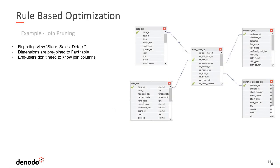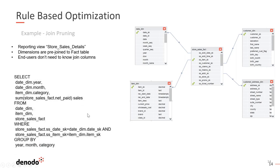Let's look at an example of what happens during rule-based optimization. Here's a simple example where I've created a view called Store Sales Details. This has a fact table and four dimensions tied to it: a date dimension, item dimension, customer dimension, and customer address dimension — a simplified but common star schema seen in sales and marketing. We've pre-joined the dimensions to the fact table so end users don't need to know the join columns, and there's no ambiguity about how to query these artifacts. It basically looks like an Excel spreadsheet where you can just pick the columns you need.